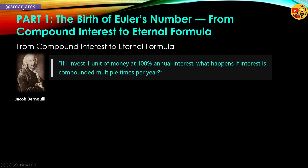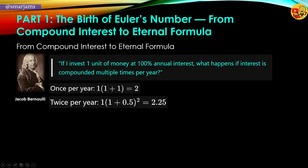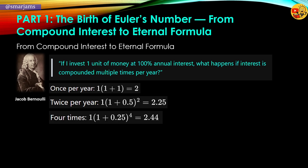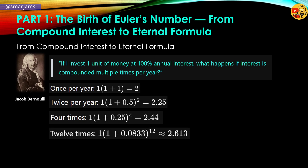With one compounding, 1 times (1 + 1) equals 2. With two compoundings, 1 times (1 + 0.5) squared equals 2.25. Four times per year, 1 times (1 + 0.25) to the fourth power equals 2.44. Twelve times, 1 times (1 + 0.0833) to the twelfth power is approximately 2.613.